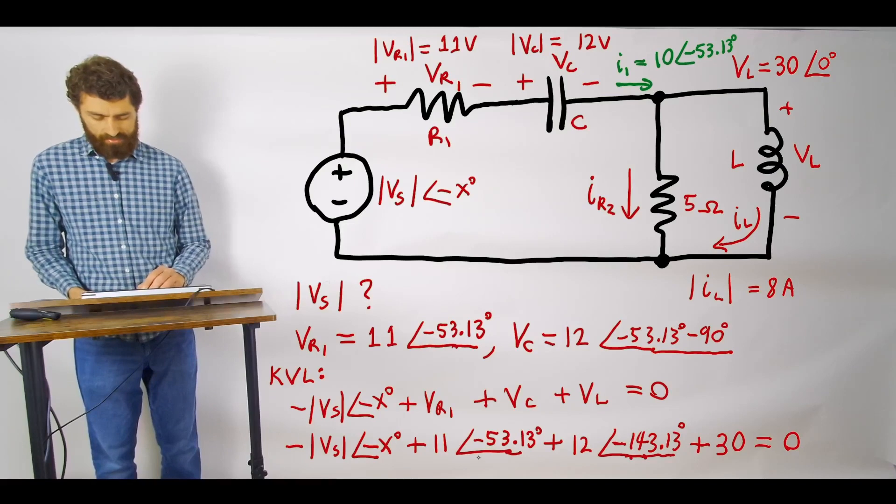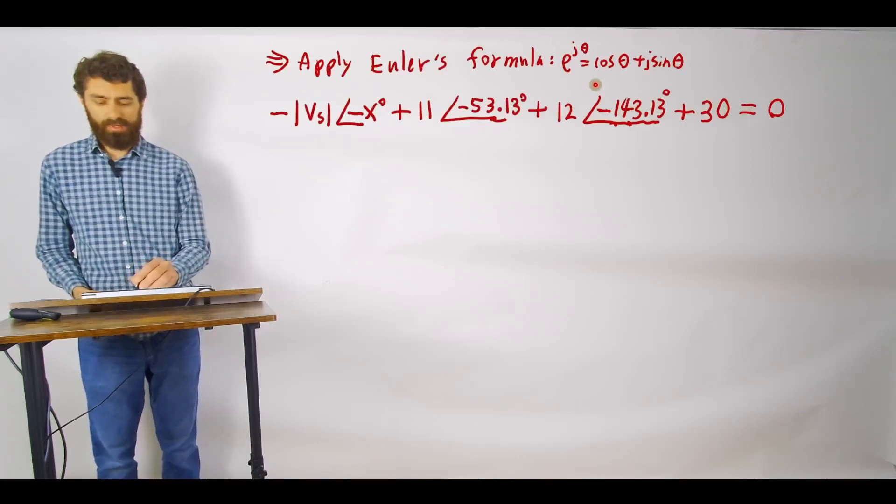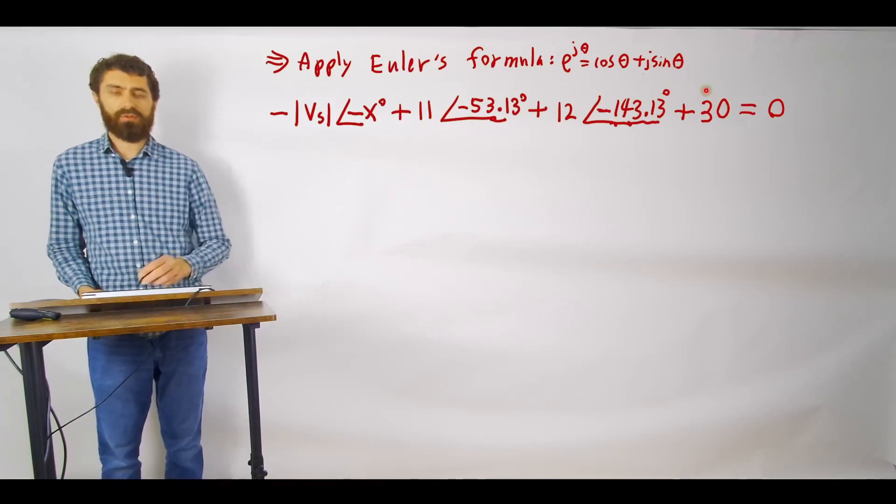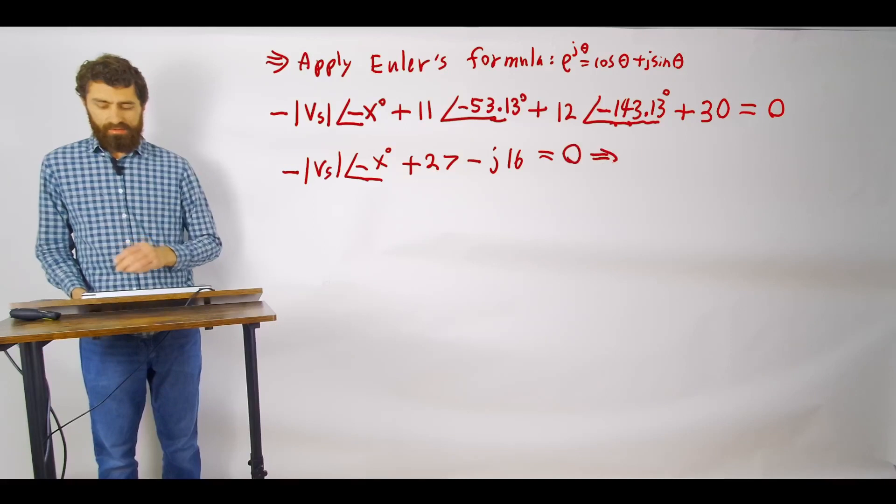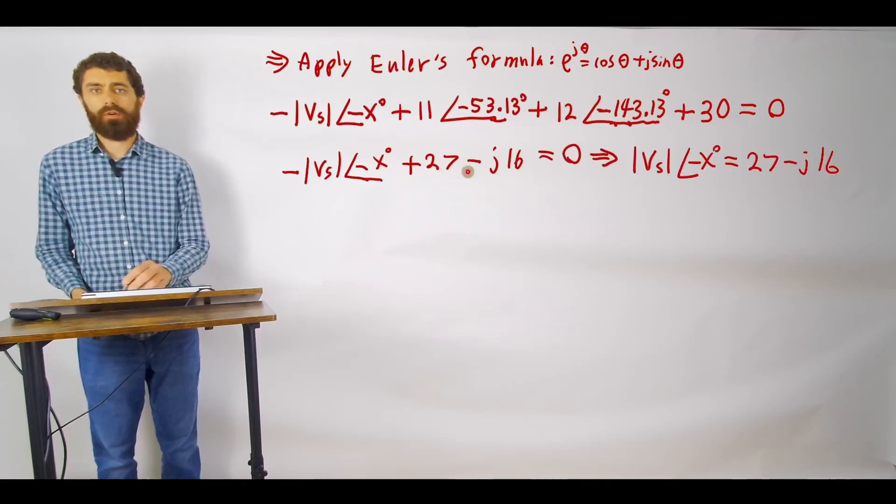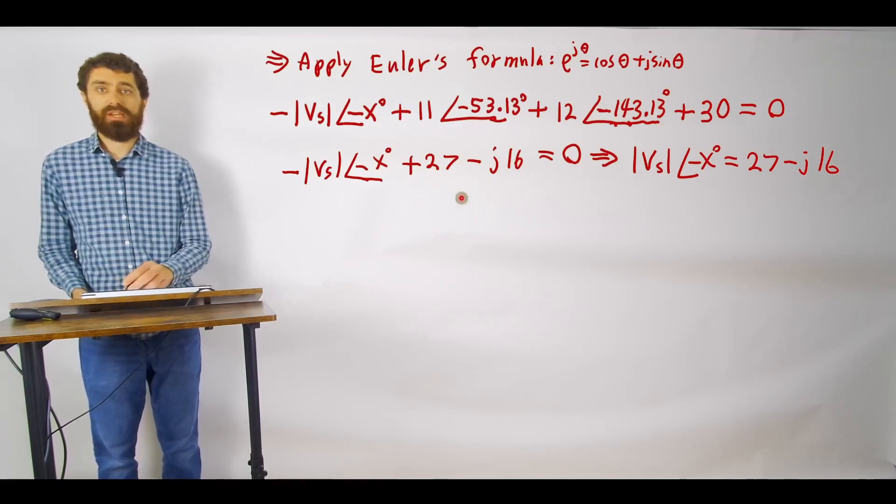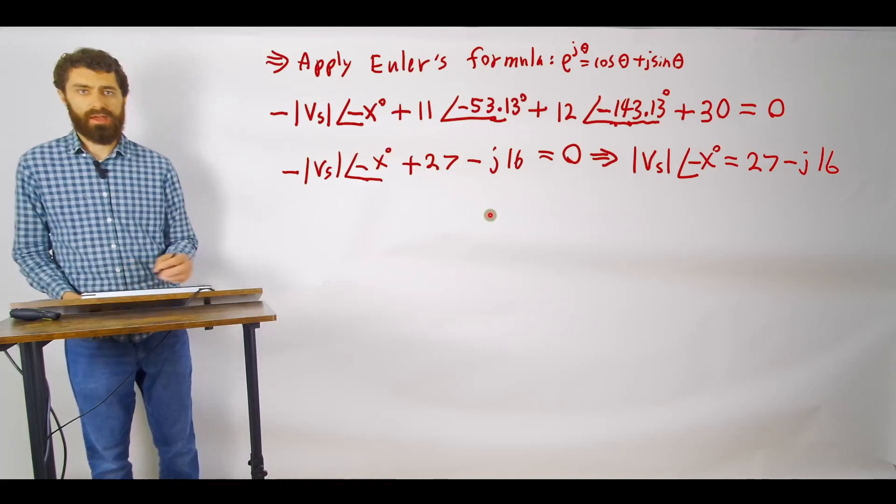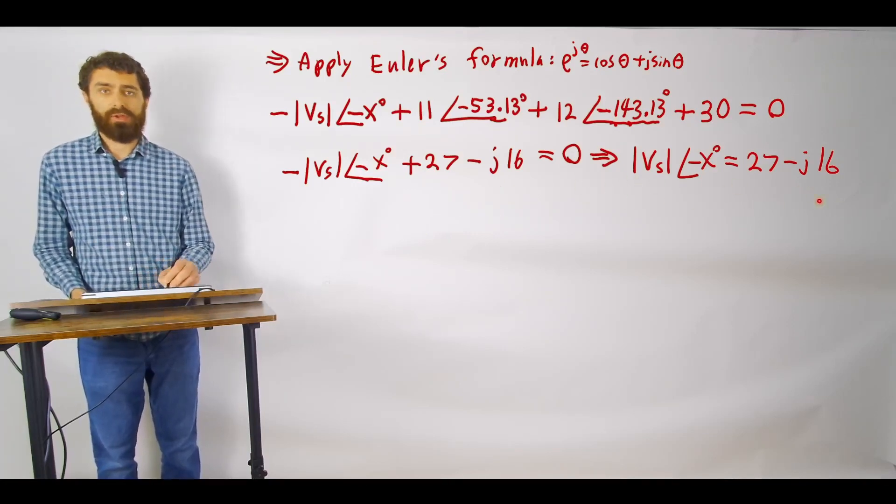and then the next step is to go ahead and simplify our equation here. We can simplify it with Euler's formula just applying e to the j theta equals cosine theta plus j sine theta and I simplified that and I got this complex number in rectangular form. You can use a calculator or like a standard TI calculator or MATLAB to do that and then I rearranged it into the following form